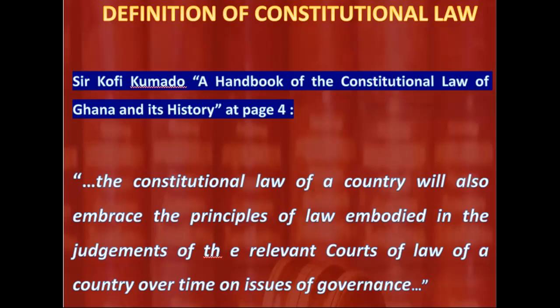It is not just the judgments of any courts at all that form part of constitutional law — it must be the relevant courts. In Ghana, for example, decisions of the district courts or circuit courts may not form part of the constitutional law. Under Articles 130 and 2 of the Constitution, it is the Supreme Court that has exclusive jurisdiction over all matters relating to the interpretation and enforcement of the 1992 Constitution of Ghana.